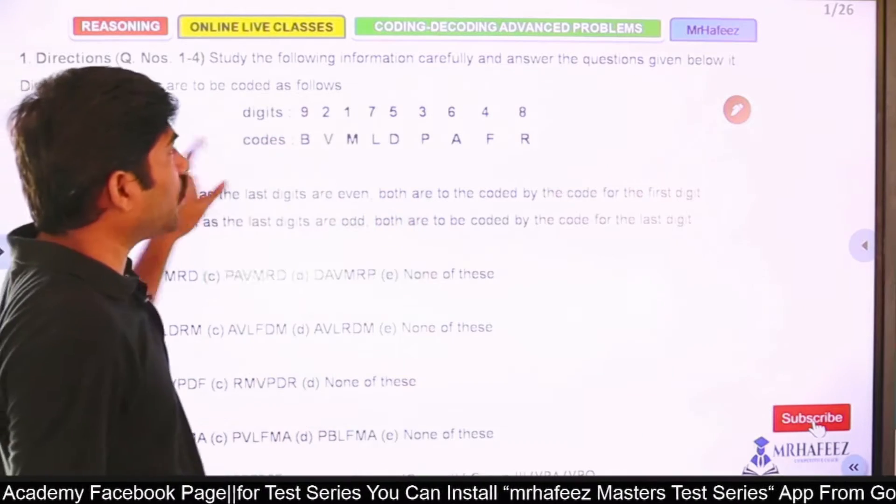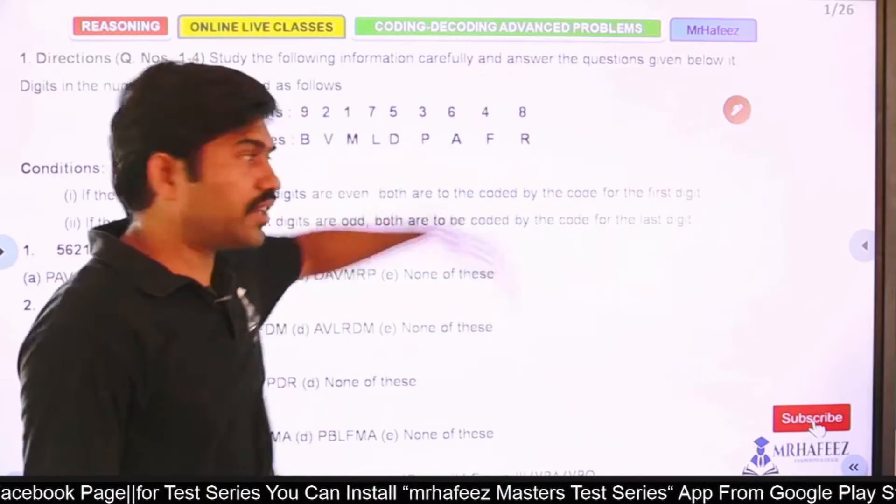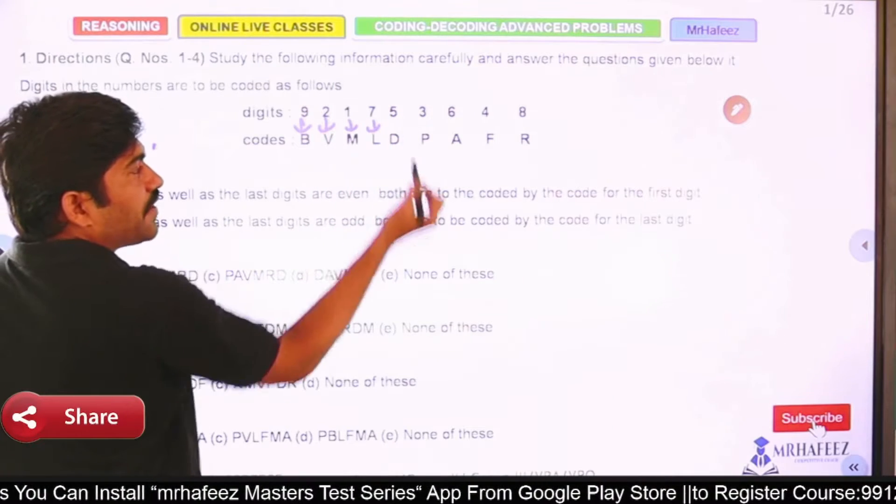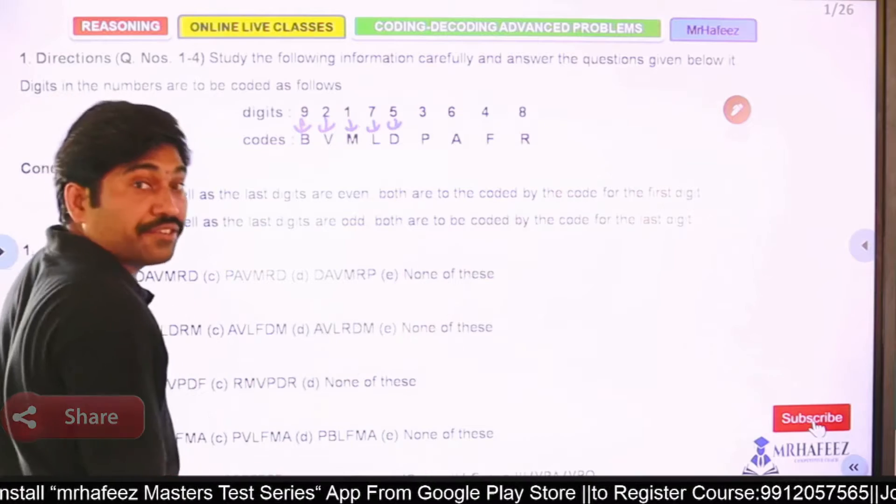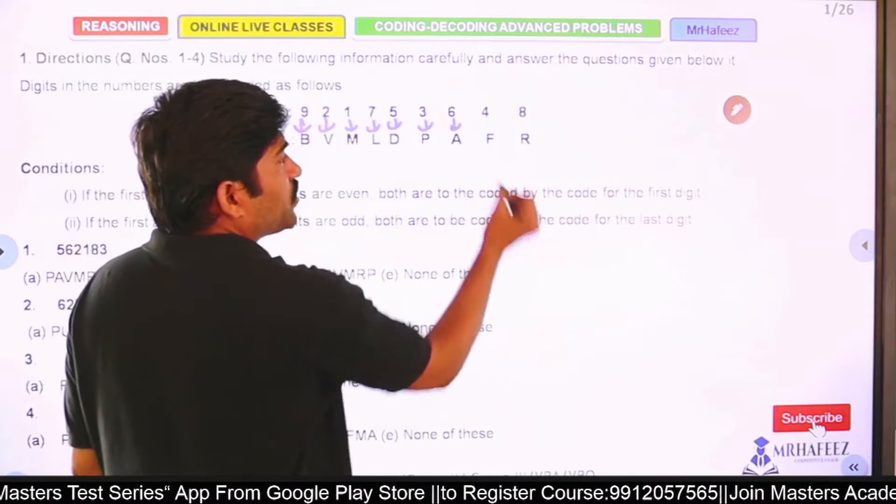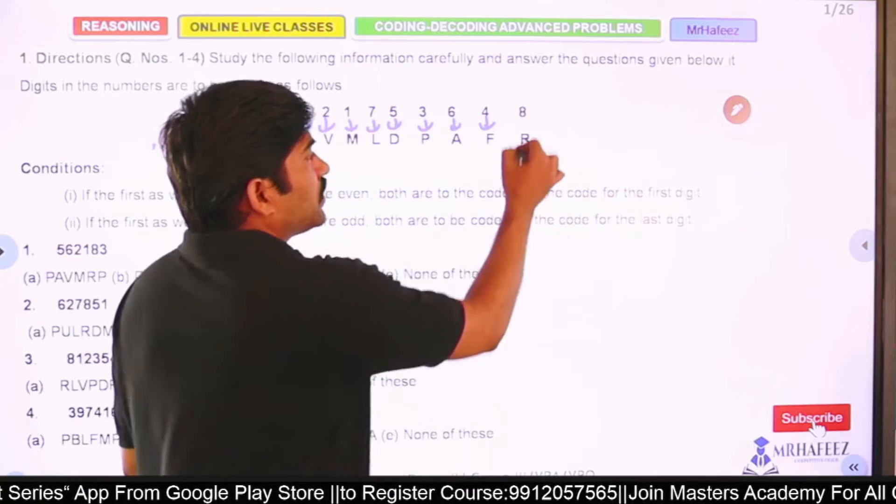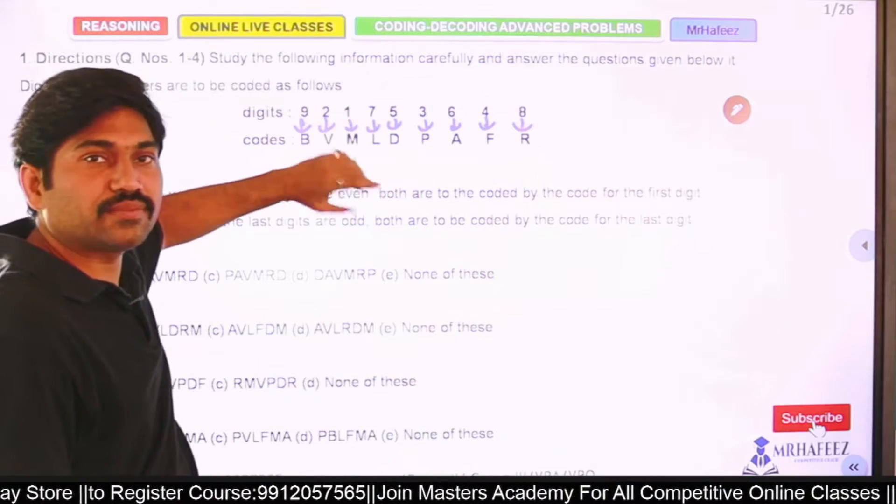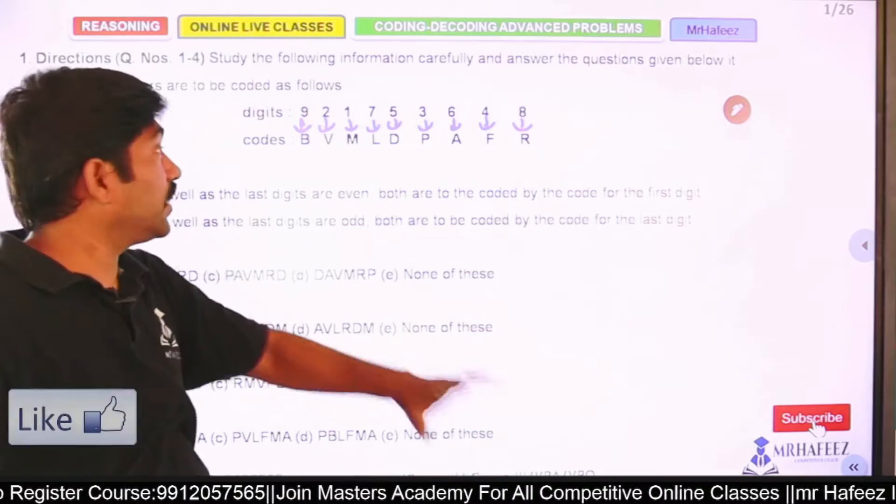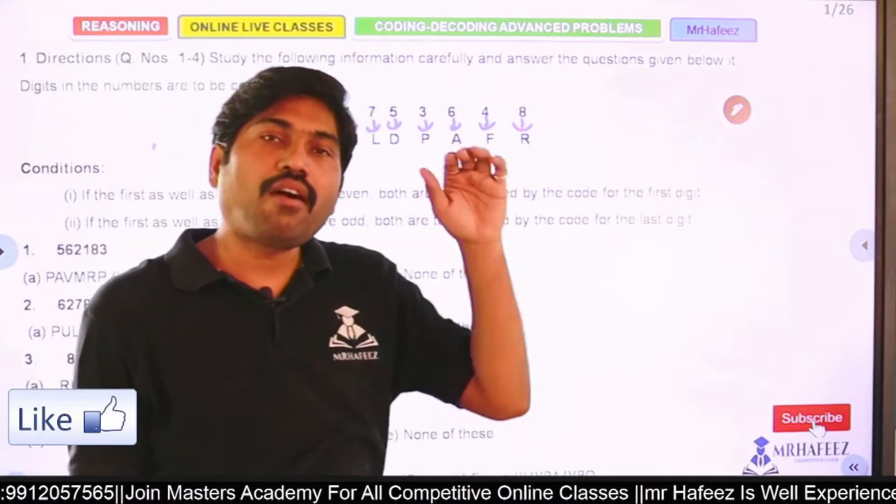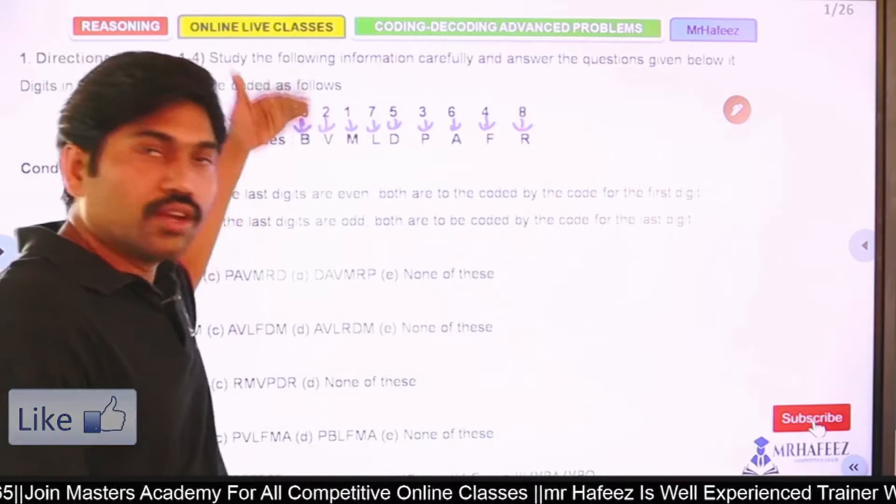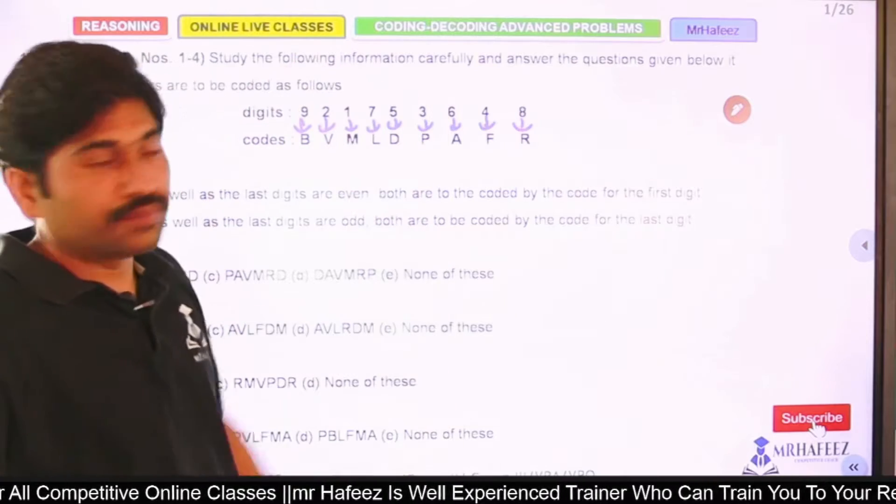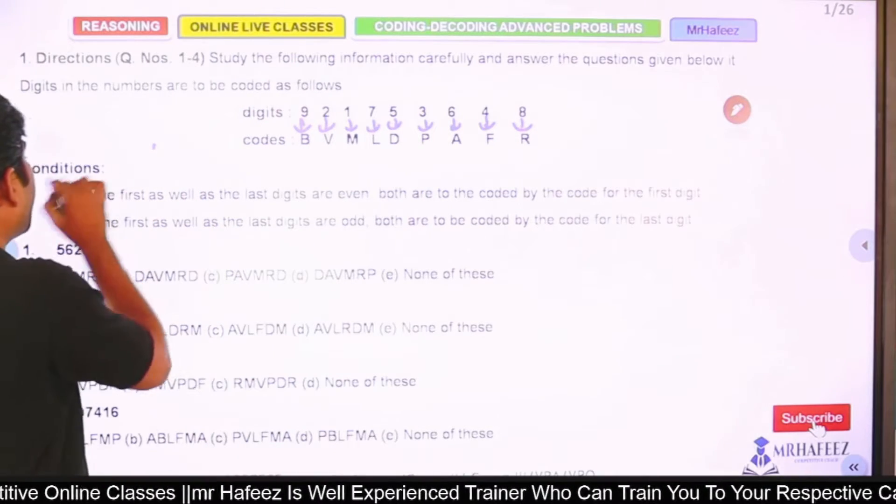Today we will discuss this. Here, digits and codes are given. 9 refers to B, 2 refers to V, 1 refers to M, 7 refers to L, 5 refers to D, 3 refers to P, 6 refers to A, 4 refers to F. All digits here have letter coding assigned to them.